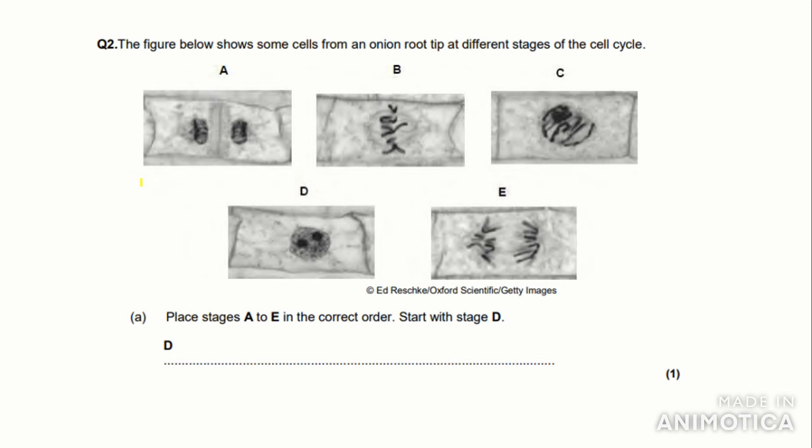So if we get on to the next question, this is another image question. The figure below shows some cells from an onion root tip at different stages of the cell cycle. Place stages A to E in the correct order, start with stage D. As it starts with stage D, we can conclude that stage D is interphase. And as I said earlier, the next stage in the cell cycle is mitosis, and the first stage of mitosis is prophase. Now if we look at these images, we can start to rule out some of them. So it can't be A. As you can see here, cytokinesis is occurring, so that obviously isn't prophase. If we look at B, the chromosomes are lined up at the middle of the cell, so that isn't prophase. If we look at E, that's actually the same image as was used a couple of questions ago. So that can't be prophase. So the only one left is C. As you can see, C, the chromosomes are condensed as the images are dark.